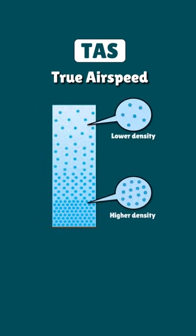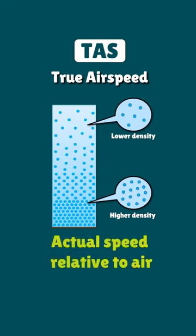There is also the true airspeed, which is the indicated airspeed we have just seen, but now corrected for changes in air density. This is useful for calculating certain aspects of flight planning, since it corresponds to the actual speed of the aircraft relative to air.